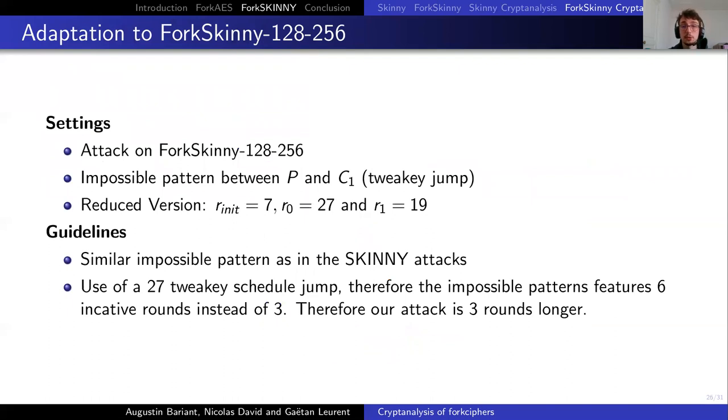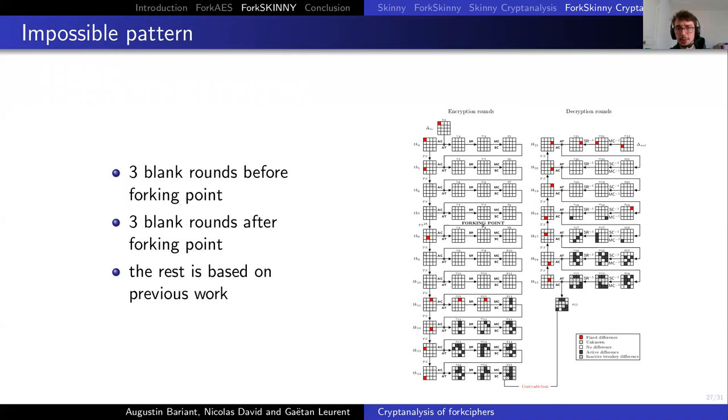So we will target ForkSkinny-128-256, place ourselves between P and C1, where there's a tweakey jump, use a reduced version with R0 still equal to 27, like in the NIST submission, and we will reduce both RI and R1. Our attack would be mostly the same as in previous work, but this time we will have three more blank rounds due to the tweakey jump, hence our attack would be three rounds longer. This is our impossible pattern. As we can see, we have three blank rounds before the forking point, and then three blank rounds after the forking point. The rest of the impossible pattern is based and built from previous work.